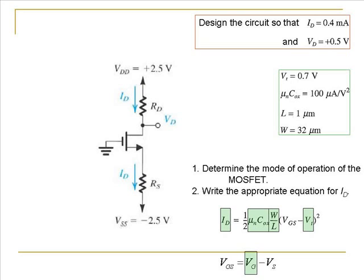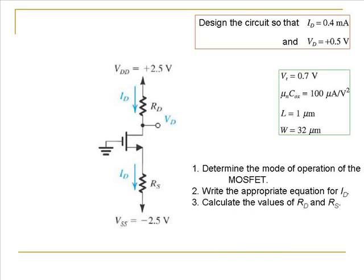The gate voltage is known because the gate is grounded and VG equals 0. The source voltage, however, is not known; therefore VGS is not known. In the equation for the drain current, all values except VGS are known. We are going to use this equation to calculate the value of VGS and therefore VS, the source voltage. Once we have VS, we calculate the values of the drain resistance RD and the source resistance RS.